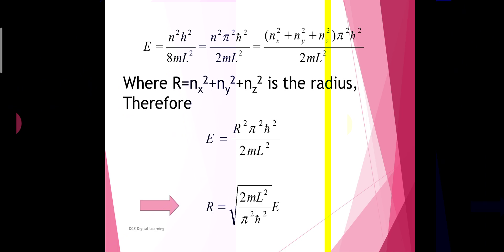We write nx² + ny² + nz² = r², where r is the radius of the sphere. Then the expression for energy is E = r²π²ħ² / 2mL², so that r = √(2mL²E / π²ħ²).